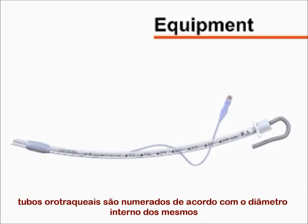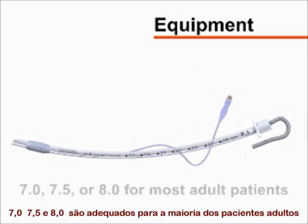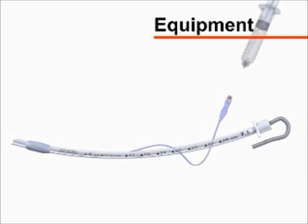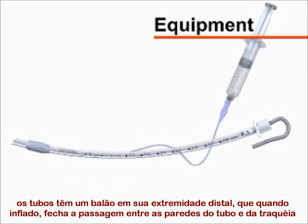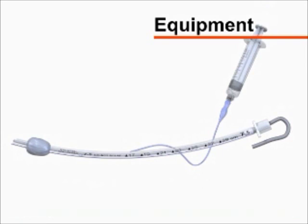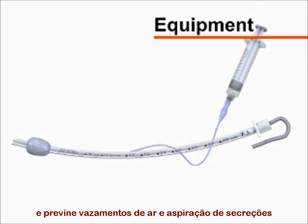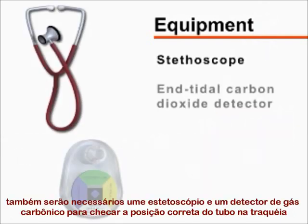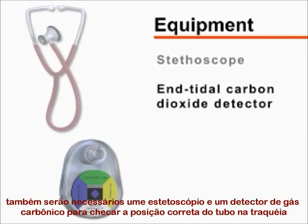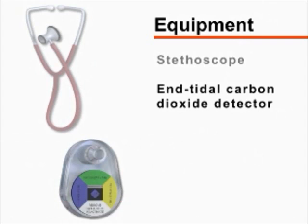Endotracheal tubes are sized according to the internal diameter of the tube. 7.0, 7.5, or 8.0 millimeter tubes are appropriate for most adults. The tubes have a balloon on the distal end that, when inflated, creates a seal between the tube and the tracheal lumen and prevents air leaks and aspiration of gastric contents. You will also need a stethoscope and an end-tidal carbon dioxide detector to assess for proper placement of the endotracheal tube.